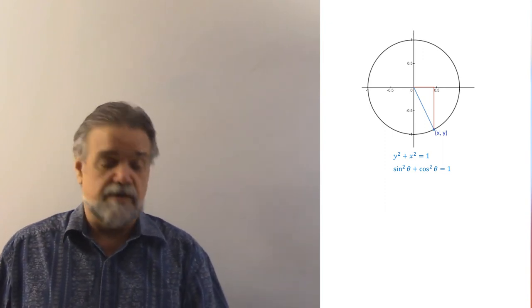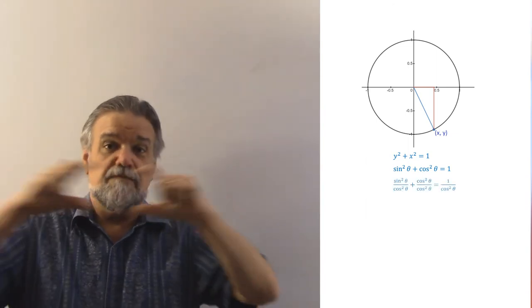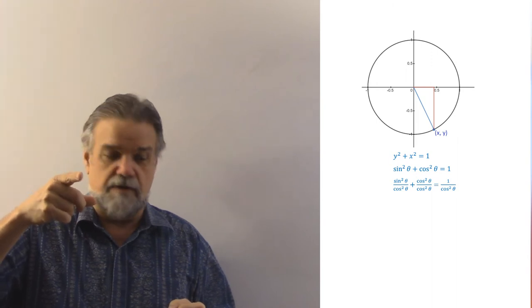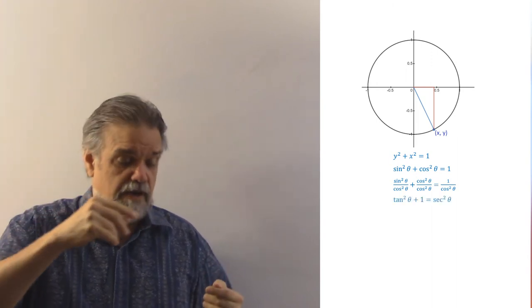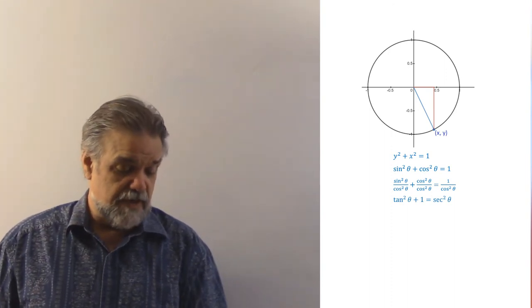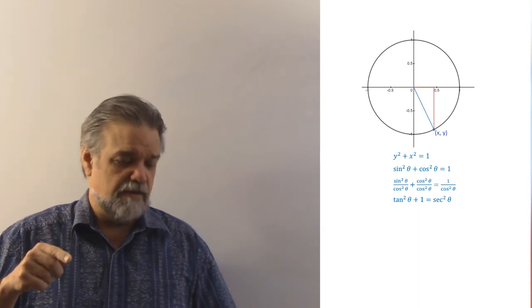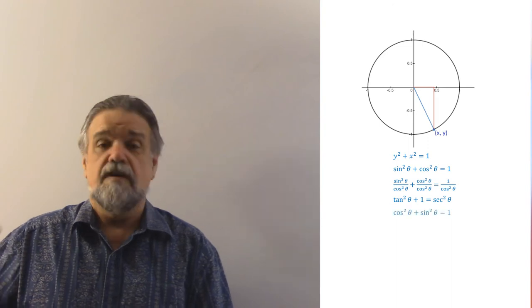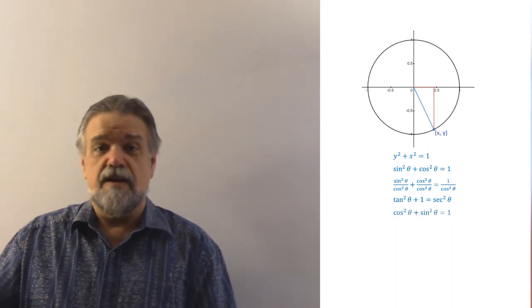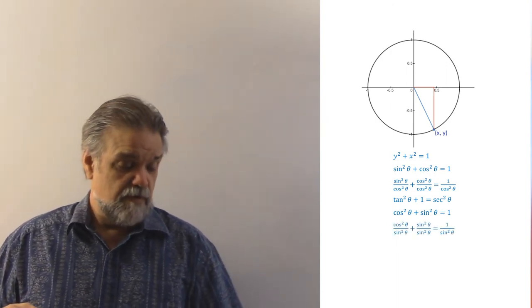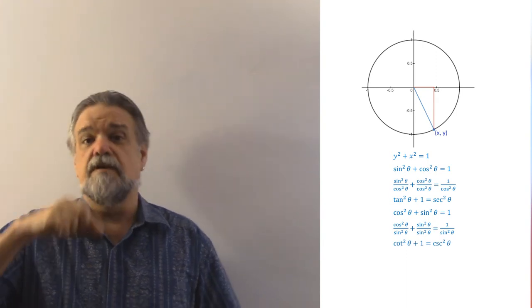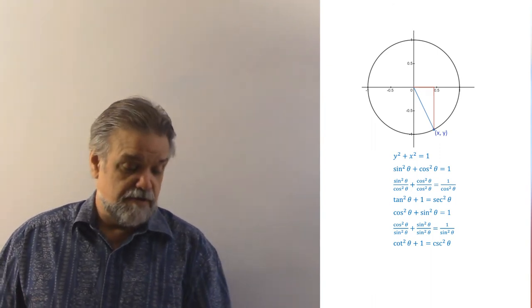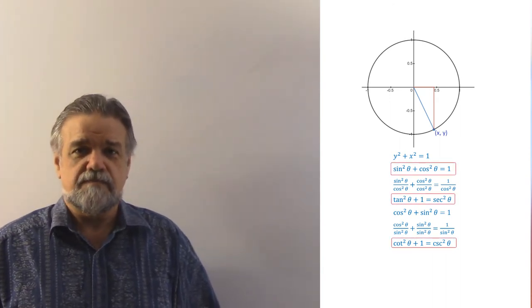We have two other Pythagorean identities. For the first, we take sine squared plus cosine squared equals one and divide everything by cosine squared. The first term becomes sine squared over cosine squared, which is tangent squared, giving us tangent squared of theta plus one equals secant squared of theta. For the last one, we divide by sine squared: cosine squared over sine squared is cotangent squared, sine squared over sine squared is one, and one over sine squared is cosecant squared — giving us cotangent squared plus one equals cosecant squared.